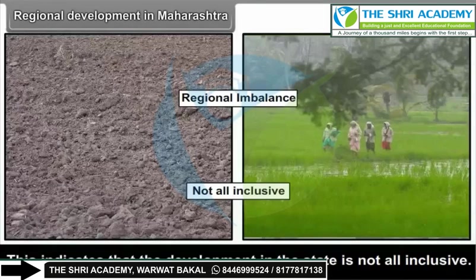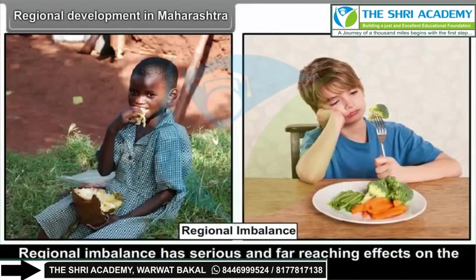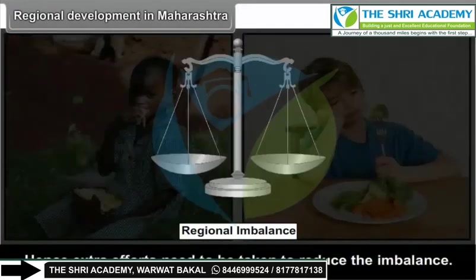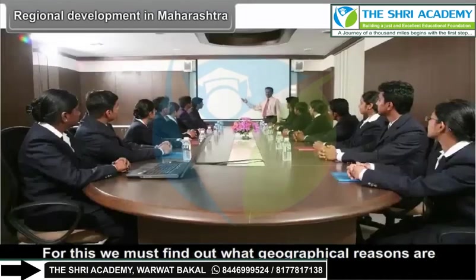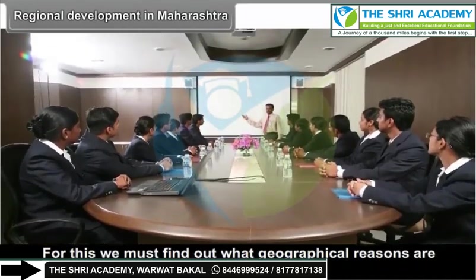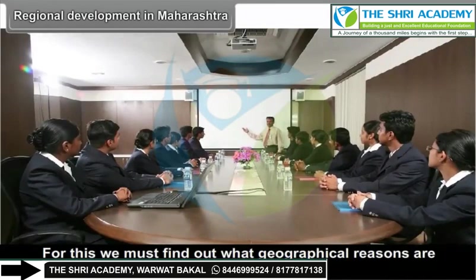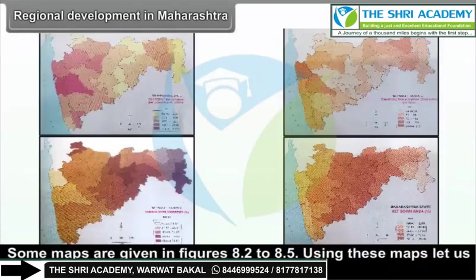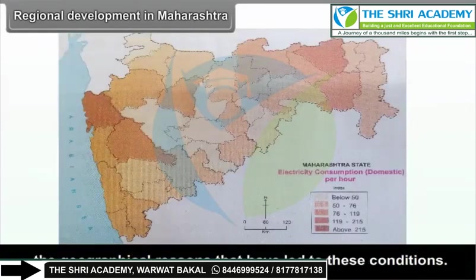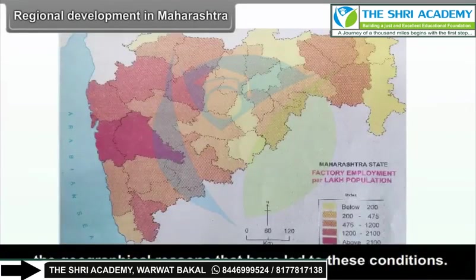This indicates that the development in the state is not all-inclusive. Regional imbalance has serious and far-reaching effects on social conditions. Hence, extra efforts need to be taken to reduce the imbalance. For this, we must find out what geographical reasons are responsible for such situations. Some maps are given in figures 8.2 to 8.5. Using these maps, let us try to understand the geographical reasons that have led to these conditions.